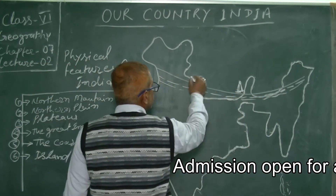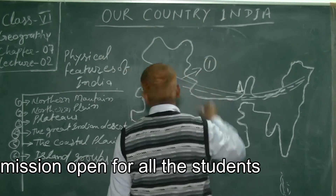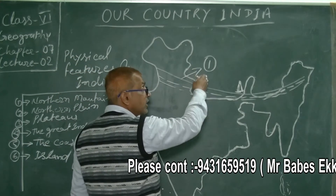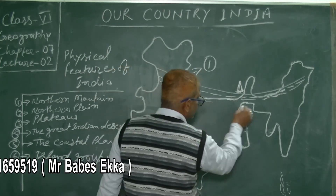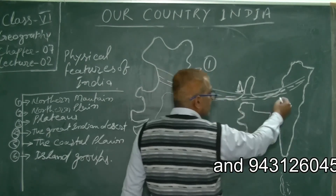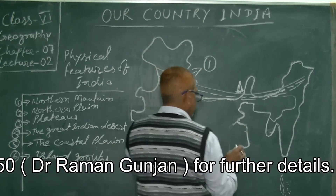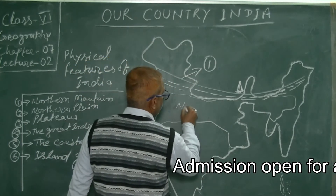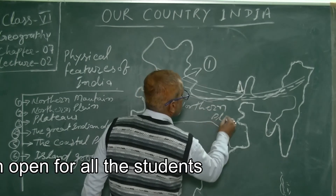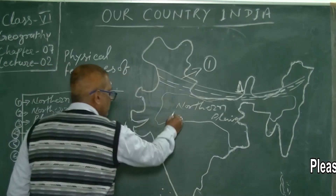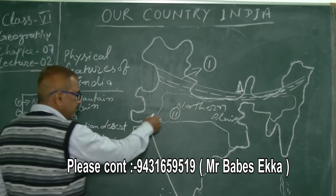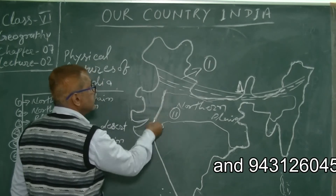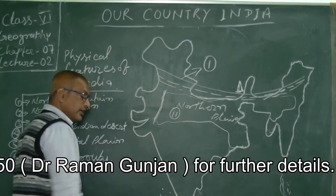Number one is the Northern Mountains. Number two is the Northern Plain, which is located south of the Northern Mountains. It starts from Punjab and extends to Assam — that is the Northern Plain. West of the Aravalli range is the Great Indian Desert.